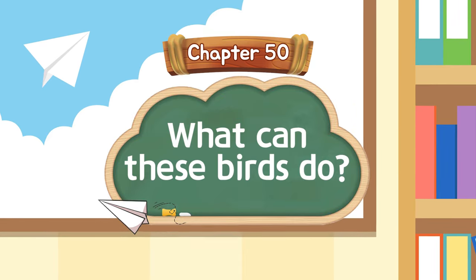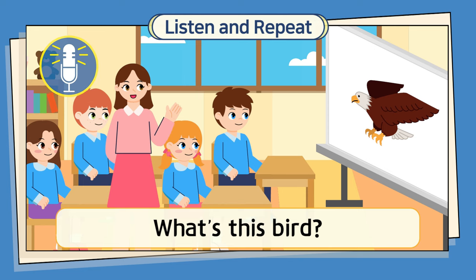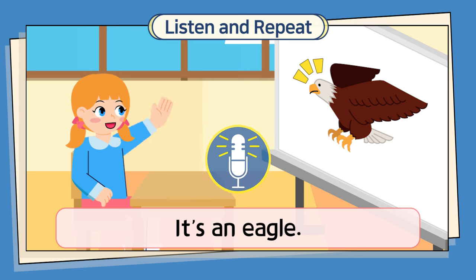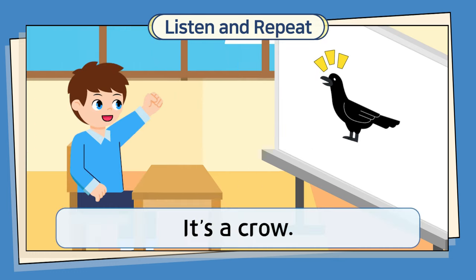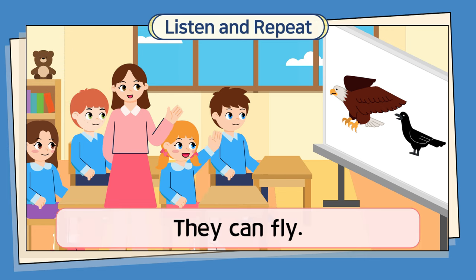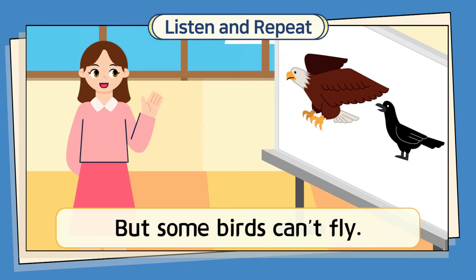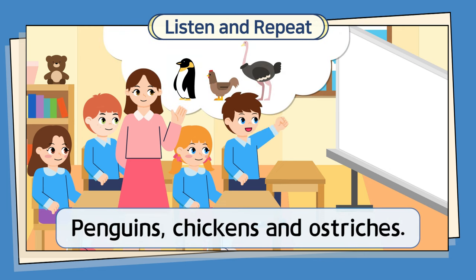What's this bird? It's an eagle. What's this? It's a crow. What can these birds do? They can fly. You're right, but some birds can't fly. What birds can't fly? Penguins, chickens, and ostriches.